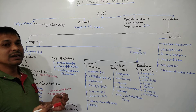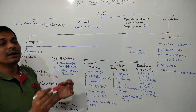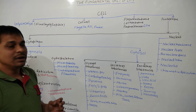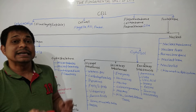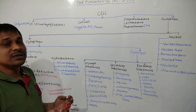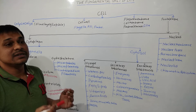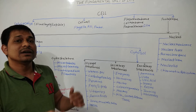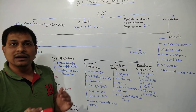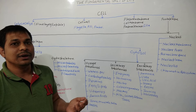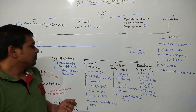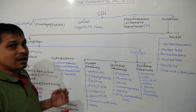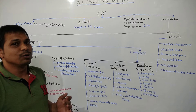Plastids are present in plant cells and are of three types: chloroplast, chromoplast, and leucoplast. Chloroplast is the green-colored plastid that provides green color to plant parts, mainly leaves, and is known as the kitchen of the cell where photosynthesis takes place. Chromoplast is a colored plastid other than green — like yellow, red, and pink. Leucoplast is the colorless plastid.